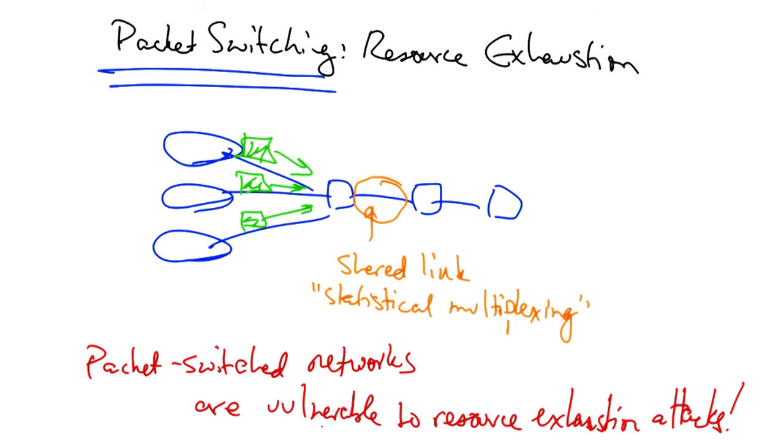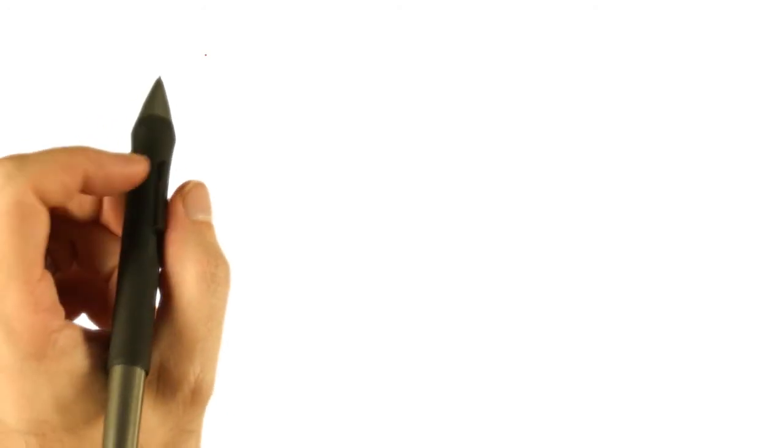Resource exhaustion attacks a basic component of security known as availability. Let's take a look at other components of security as well.